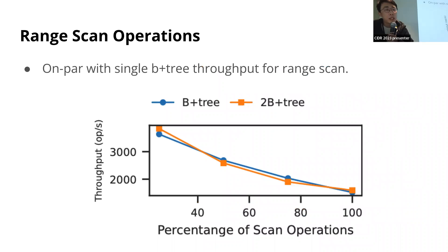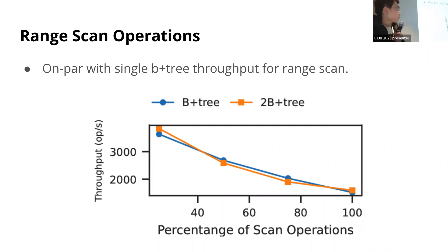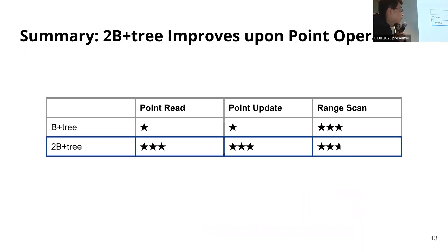Next, we looked at the range scan operation. The workload is a mixture of point lookups and short range scan operations. Each scan operation accesses 100 consecutive records starting at a specific key. On average, 2BTree causes five to ten percent more IO operations per scan, but its throughput is on par with the single B-tree case. In summary, 2BTree is able to improve point operations for skewed workloads while delivering comparable range scan performance.